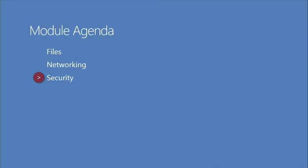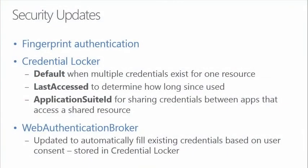We've talked about networking features. Now let's address security. For starters, someone in chat mentioned fingerprint authentication — you'd need a reader, and there's a demo you can download at aka.ms/whatsnew8.1 if you have one. There are also updates to the credential locker, which allows persistence of credentials for a user. Sometimes they have multiple credentials for one resource, like multiple Twitter accounts.